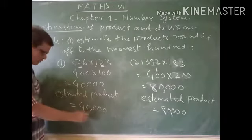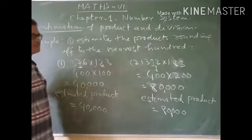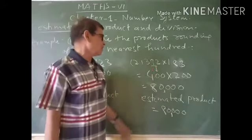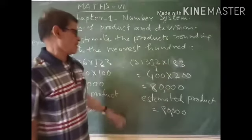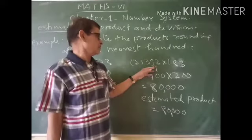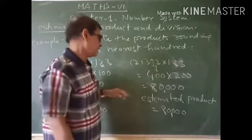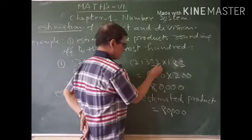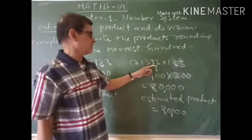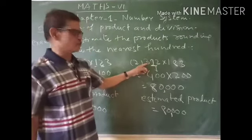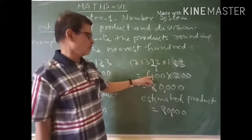Now come to this example: 392 × 183. We have to observe the digit at the tens place. Here at the tens place, there is 9. So 1 should be added to digit 3. This will become 400.